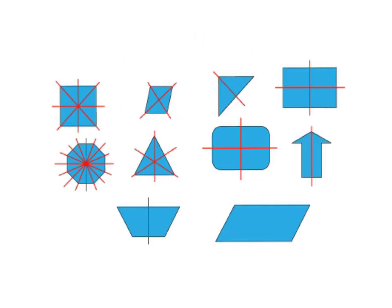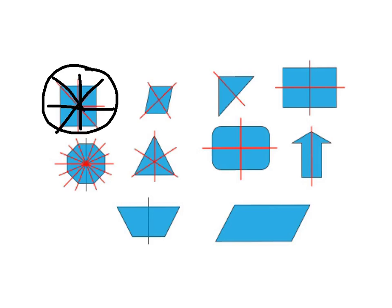Geometric shapes have different amounts of symmetry. A square has four lines of symmetry: vertical, horizontal, and two diagonal lines of symmetry. A rhombus has two lines of symmetry, diagonal. A triangle has one line of symmetry, but not all triangles have the same number of lines of symmetry. A rectangle has two lines of symmetry: vertical and horizontal. You can look at the other shapes and see how many lines of symmetry each have.